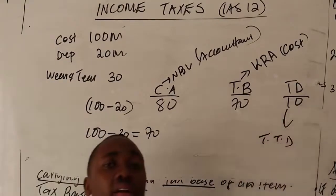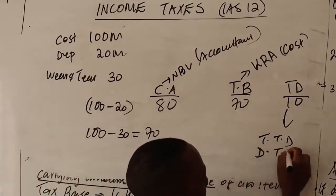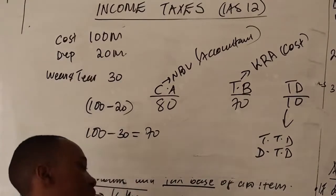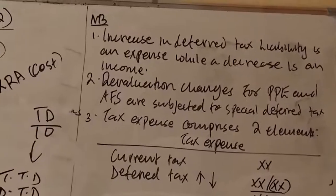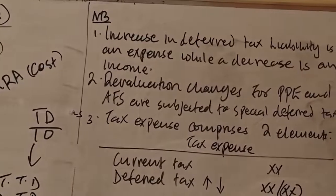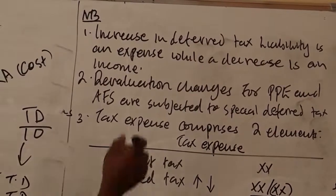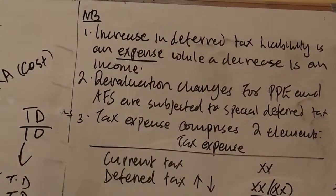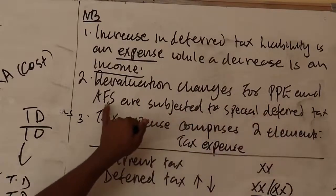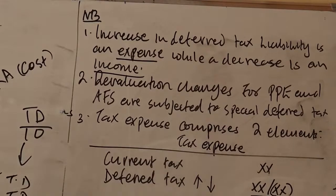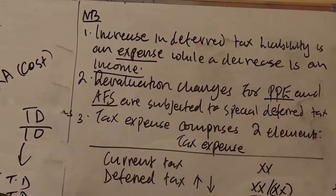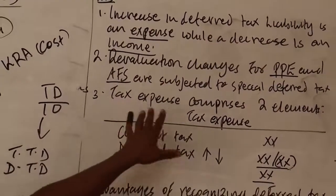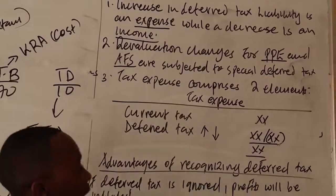This 10 is the temporary difference. When it's positive, it's called a taxable temporary difference. If it were negative, it would be a deductible temporary difference. NB number one: an increase in deferred tax liability is an expense, while a decrease is an income. NB two: revaluation changes for PPE and available-for-sale assets are subjected to special deferred tax treatment.